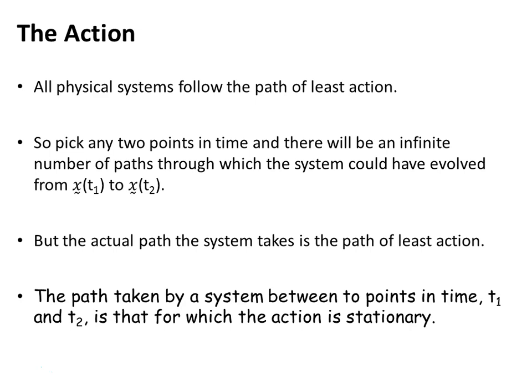Now all physical systems follow the path of least action. So you can pick any two points in time and there will be an infinite number of paths between the system physically in coordinate space through which the system could evolve from x(t₁) to x(t₂). But the actual path the system takes is the path of least action. So more formally, the path taken by a system between two points in time, t₁ and t₂, is that for which the action is stationary.